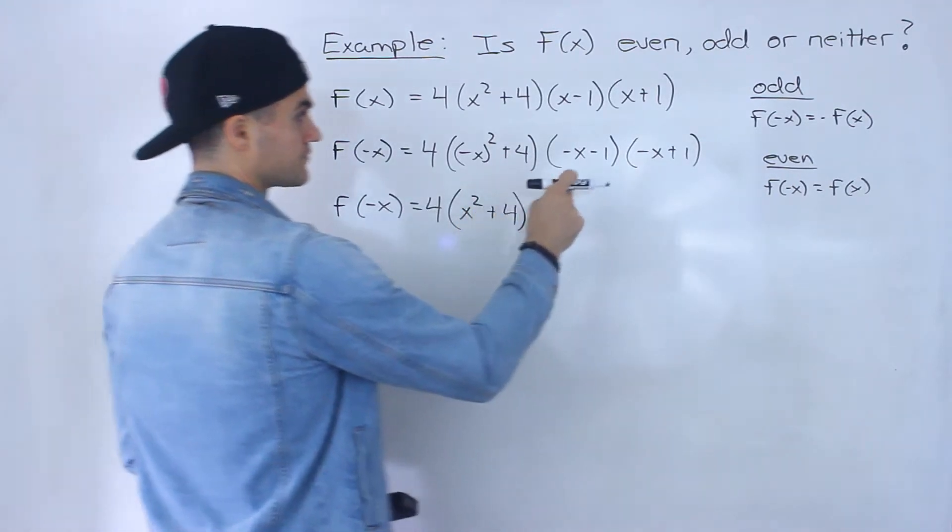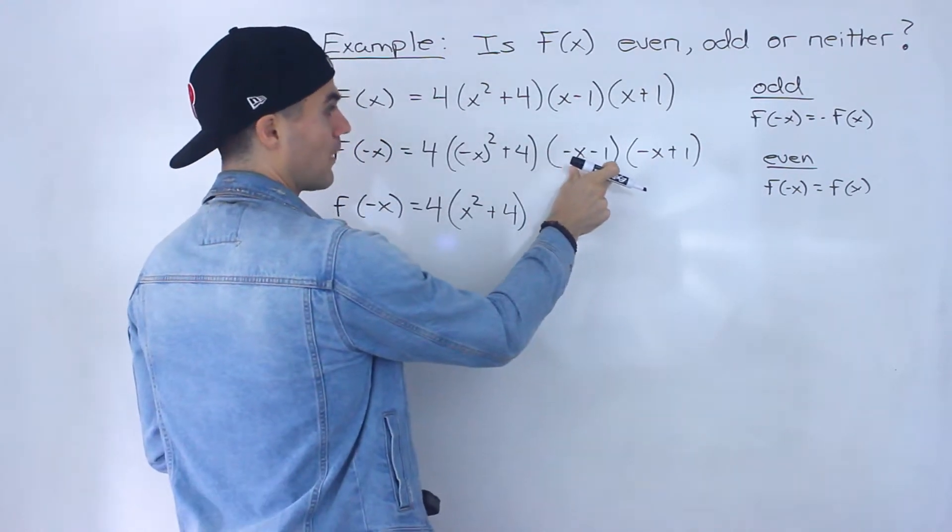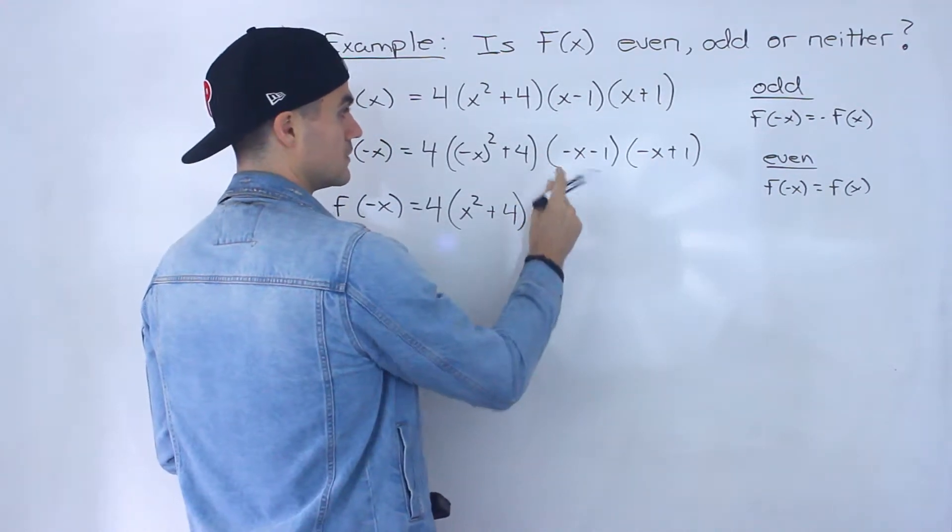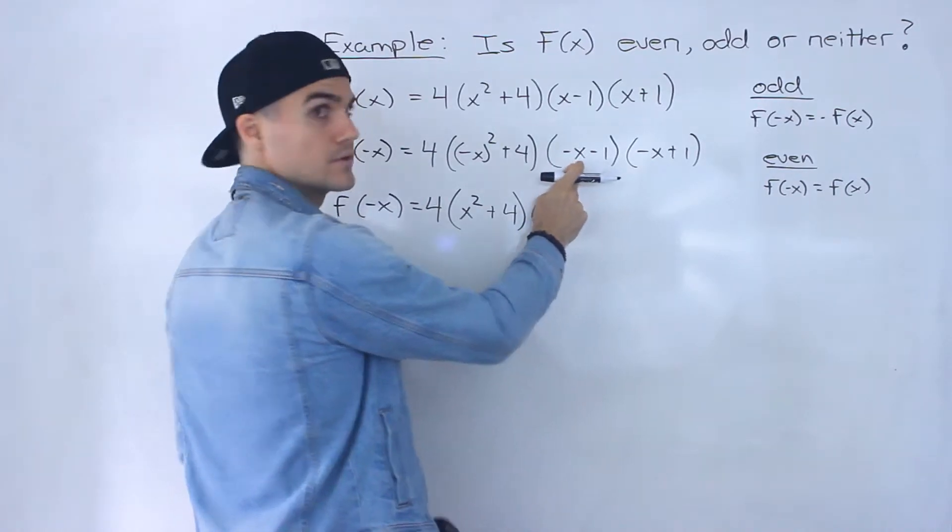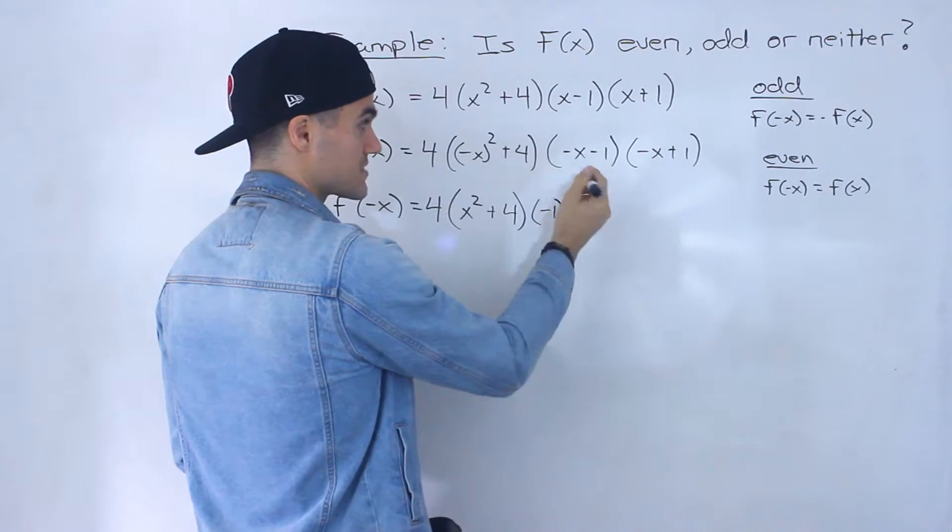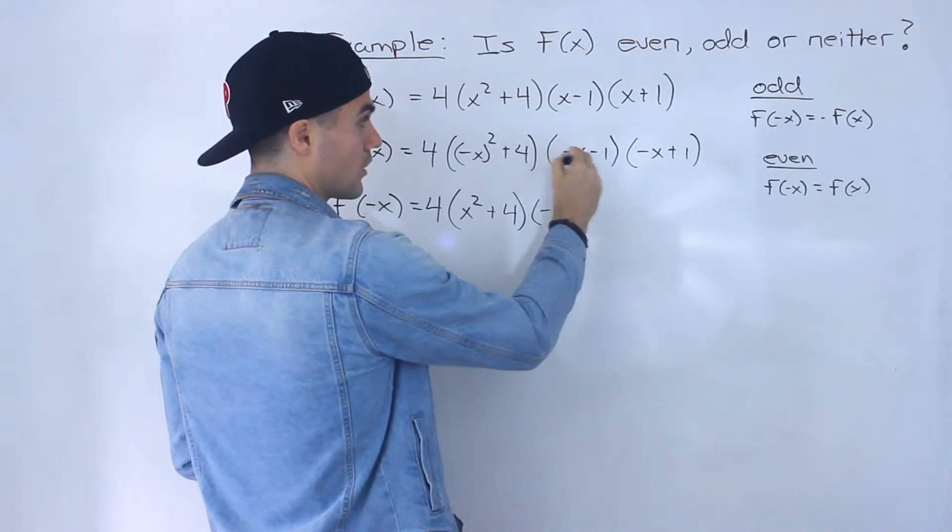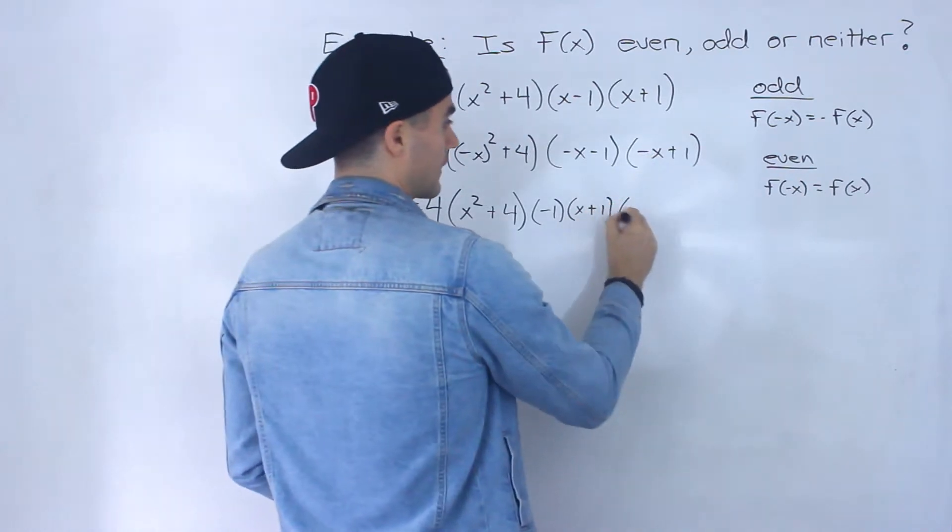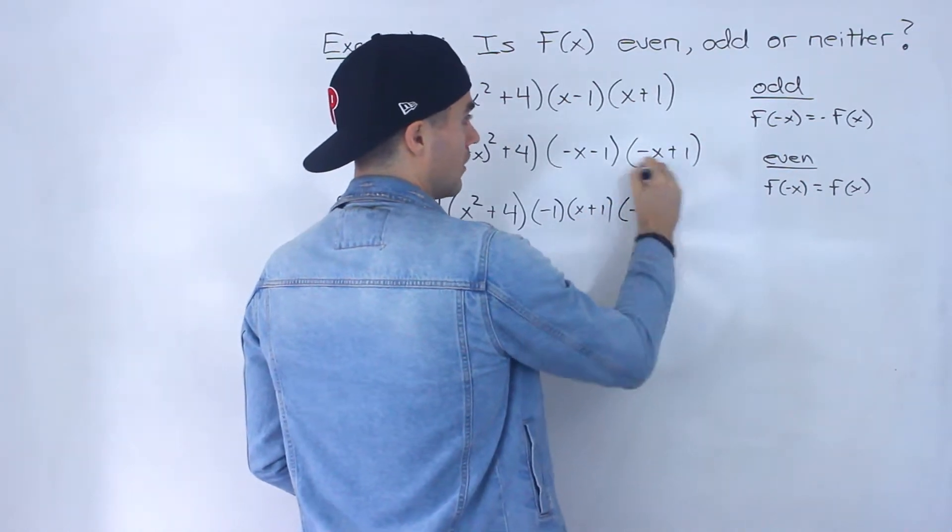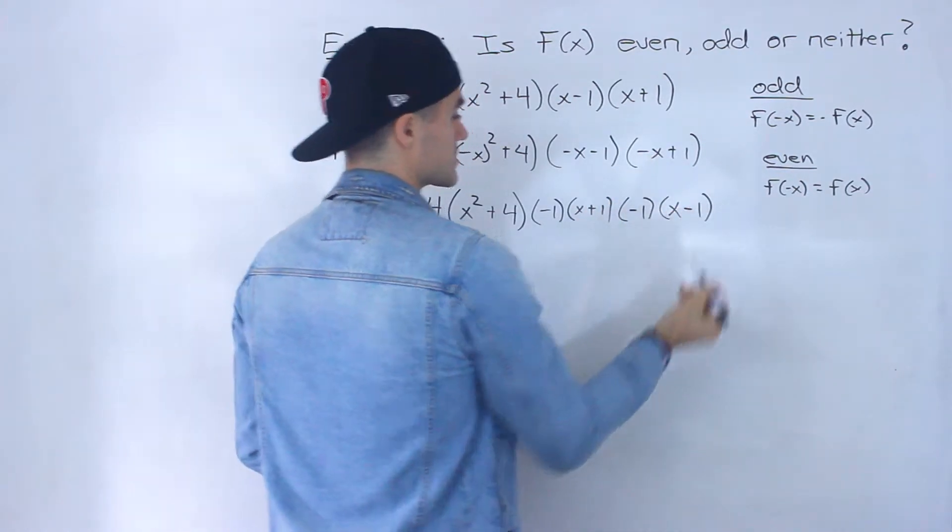Now what we do here is we want to factor out a negative 1 from these brackets in order to make that leading coefficient in the factor positive again. So if we factor out a negative 1 here, all the signs would change. This would become x plus 1. If we factor out a negative 1 here, all the signs would change. That would become x minus 1.